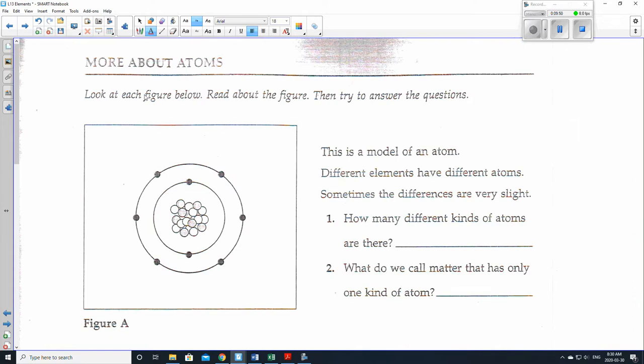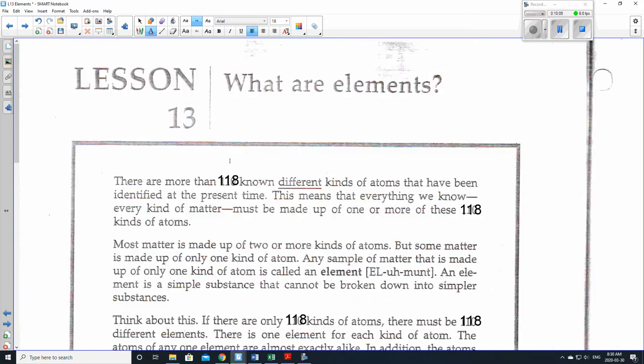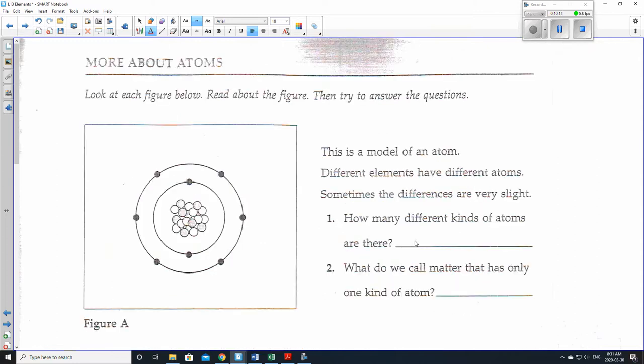Let's see some questions about this. More about atoms look at each figure below read about the figure then try to answer the questions. This is the model of an atom different elements have different atoms. Sometimes the differences are very slight. Now how many different kinds of atoms are there? So let's look back. There are more than 118 different kinds of atoms.